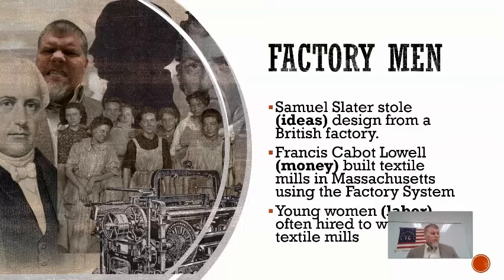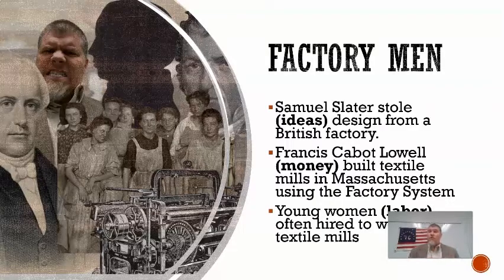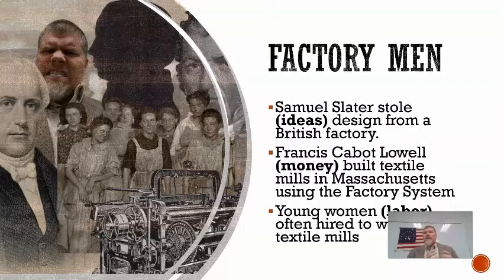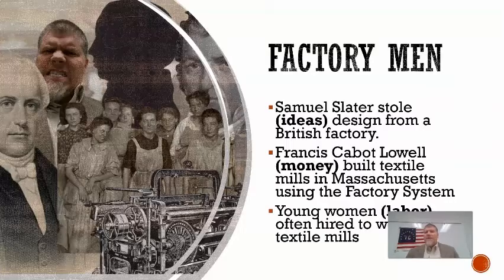To summarize, for the factory system to work you need money, you need resources and power — whether a water source or coal — you need the ideas to know how to make the machinery, and finally you need the labor. Most of that labor, especially at first, was done by women and children. That is the factory system of the industrial revolution.